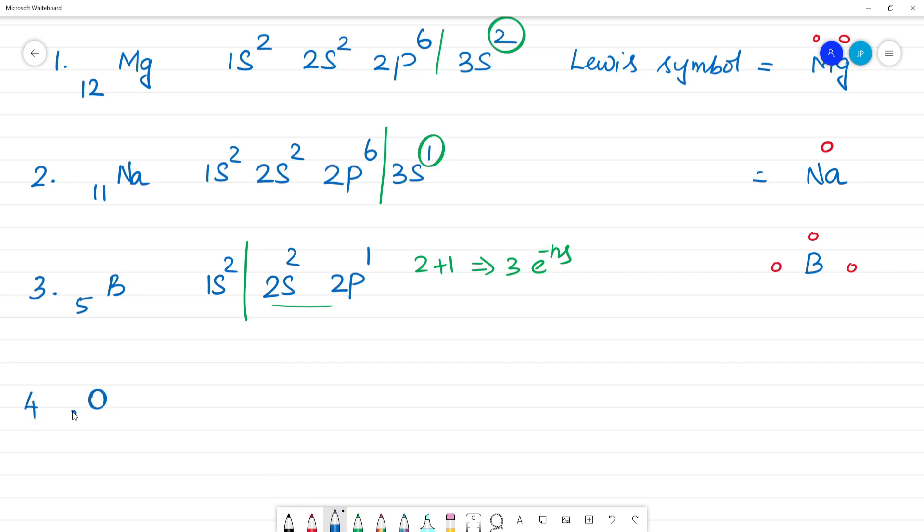Fourth one is oxygen. Oxygen's atomic number is 8. Electronic configuration: 1s is 2, 2s is 2, 2p is 4. This is the outer electronic configuration. 1s is the inner. 2 plus 4, that is equal to 6 electrons.